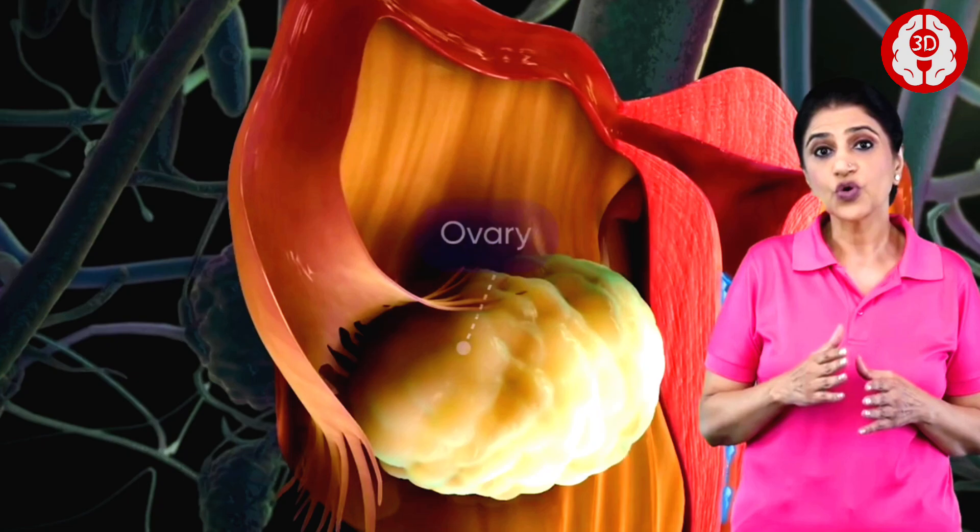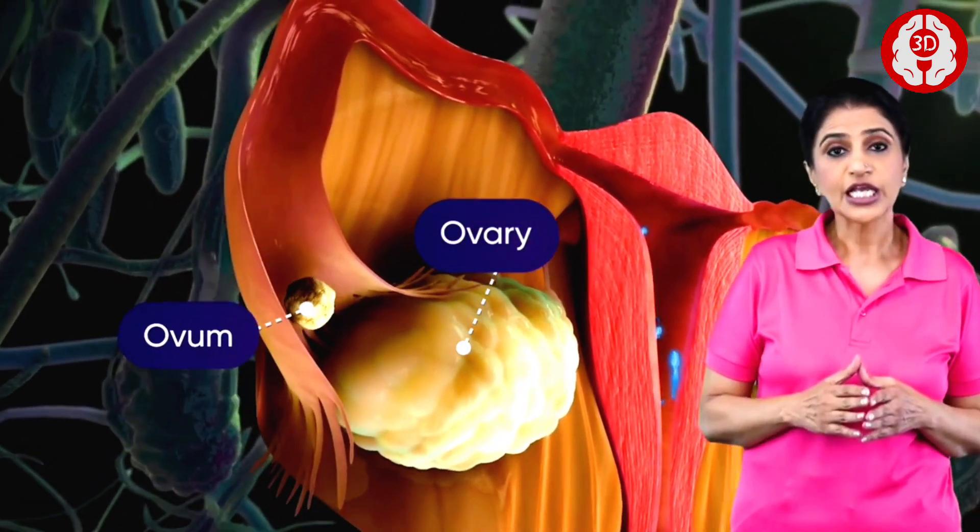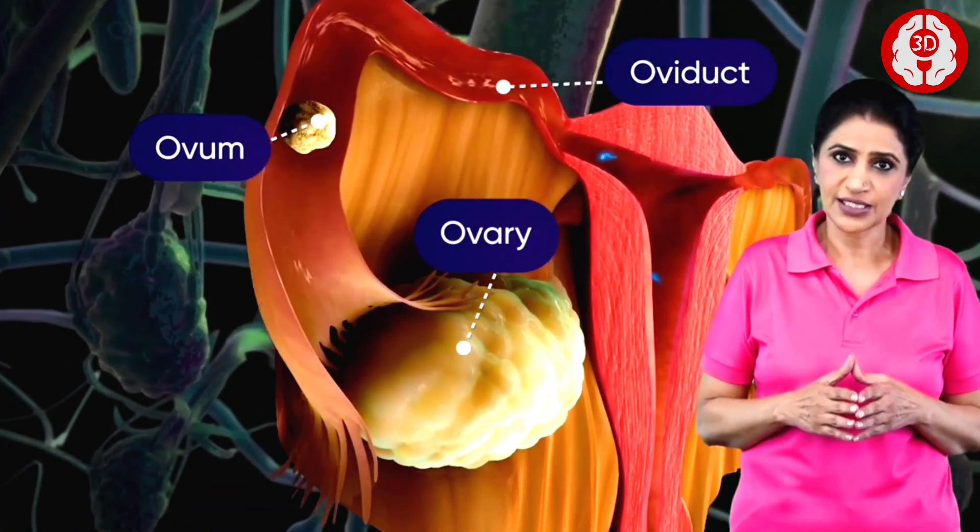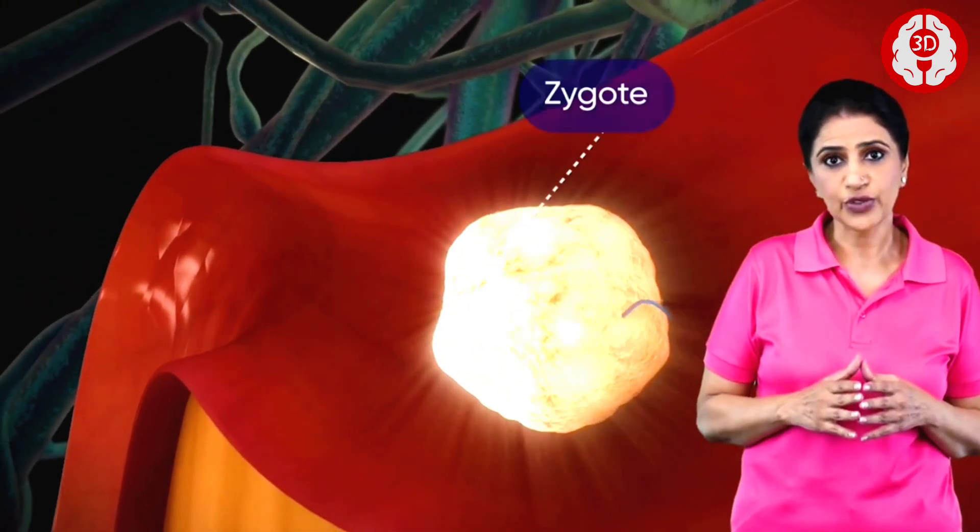Meanwhile, if the ovary releases an ovum, it also enters the oviduct. Inside the oviduct, a single sperm fuses with the ovum and forms the zygote.